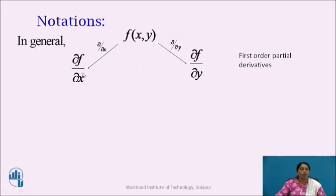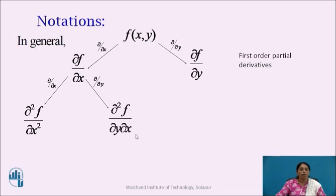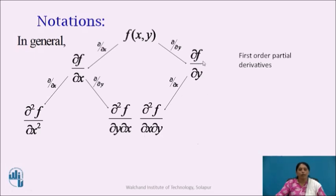When ∂f/∂x is differentiated partially with respect to x, we get ∂²f/∂x². When ∂f/∂x is differentiated partially with respect to y, we get ∂²f/∂y∂x. Similarly, when ∂f/∂y is differentiated partially with respect to x, we get ∂²f/∂x∂y, and when ∂f/∂y is differentiated partially with respect to y, we get ∂²f/∂y².